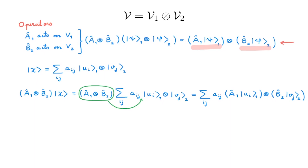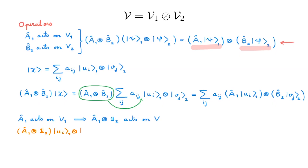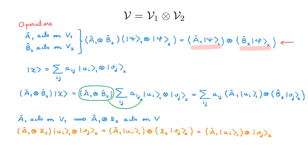A very common family of operators we encounter in tensor product spaces are operators that only act on one of the individual spaces. For example, consider A₁ acting on V1. How does A₁ act in the tensor product space V? We can write it as the tensor product of A₁ with the identity operator in V2. Acting with this operator on a tensor product basis state gives us the action of A₁ on the part of the state in V1, and the action of the identity on the part of the state in V2, leaving the V2 part untouched. Similarly, an operator B₂ originally acting on V2 is promoted to the tensor product of the identity in V1 with B₂ when it acts on V.